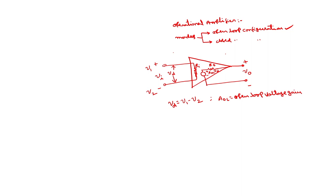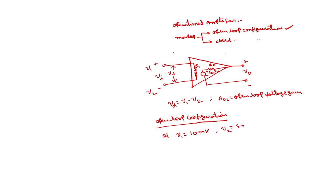There are some limited applications of this op-amp in open loop configuration. I will discuss why open loop configuration is rarely used. If I assume V1 is 10 millivolts and V2 is 5 millivolts, and the open loop gain is 10 to the power of 5 — in the case of a 741 op-amp this is 2 times 10 to the power of 5.